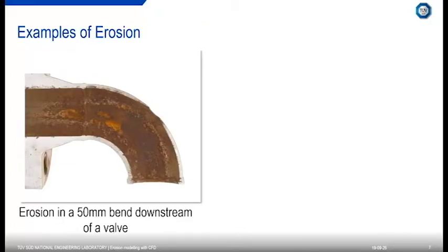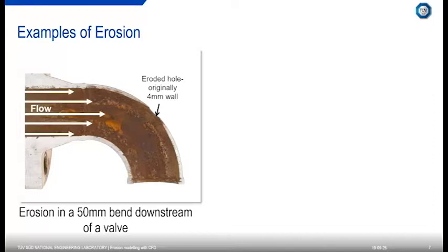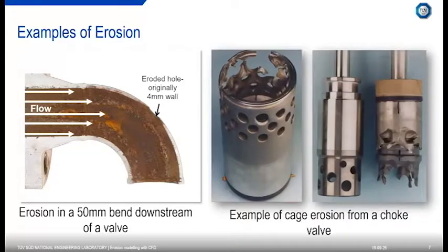Here are a few examples of what erosion can actually do. We have an example of a two-inch elbow, as seen on the screen. This was caused by sand flowing from the left-hand side at high velocity and impinging on the elbow, eventually causing a hole to form and a loss of containment. The flow is going from right to left — a high velocity region in the centre of the pipe hits the elbow and creates a hole. Another example is a severely worn choke valve cage, which would have significant issues in terms of flow assurance but also the functionality of the valve itself.